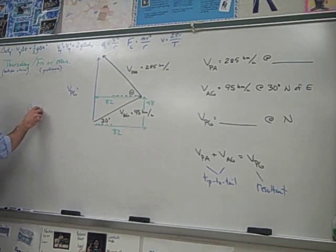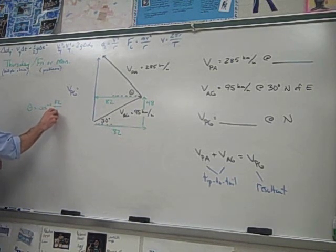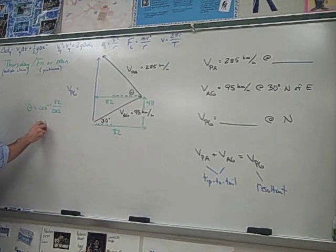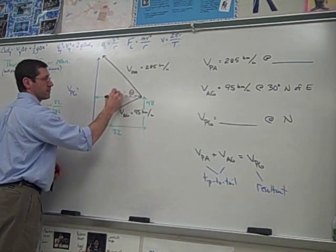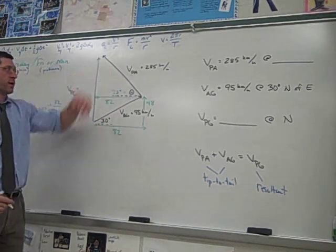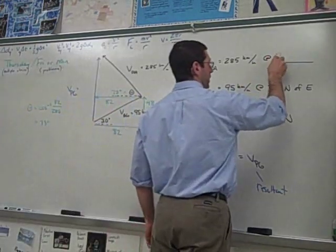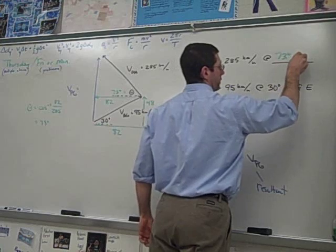82 over 285, that gives me 73 degrees. So what we just found is that this angle is 73 degrees, and that's north of west. So that goes here: 73 degrees north of west.